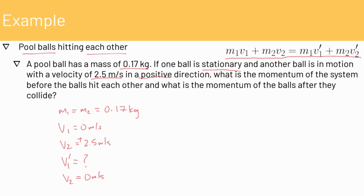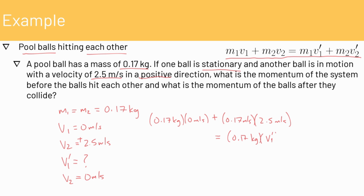Now let's plug into our equation. We have 0.17 kilograms times 0 meters per second, plus 0.17 kilograms times 2.5 meters per second (positive), equals 0.17 kilograms times V1 prime, plus 0.17 kilograms times 0 meters per second. On the left side of the equation, this gives us 0.425 kilogram meters per second, which equals 0.17 kilograms times V1 prime.